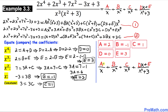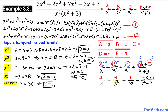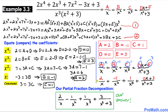In our partial fraction decomposition, we replace the constants: a with 2, b with negative 1, c with 1, d with 0, and e with 3. Here is the final partial fraction decomposition after substituting all constant values. Thanks for watching, and please don't forget to subscribe to my channel for more exciting videos.